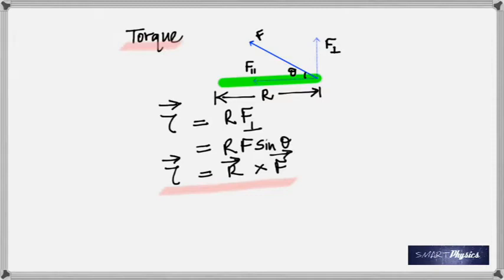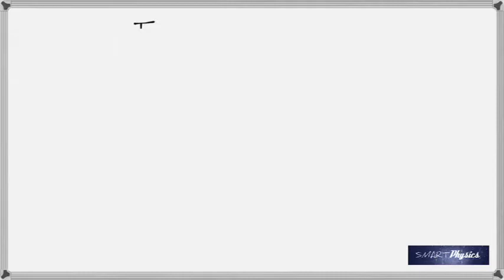Torque is a vector. When you take the cross product of two vectors, you get another vector; a dot product gives a scalar. Note that R × F is not the same as F × R — one is the negative of the other, so always write it as R × F. The unit of torque is meter-newton.